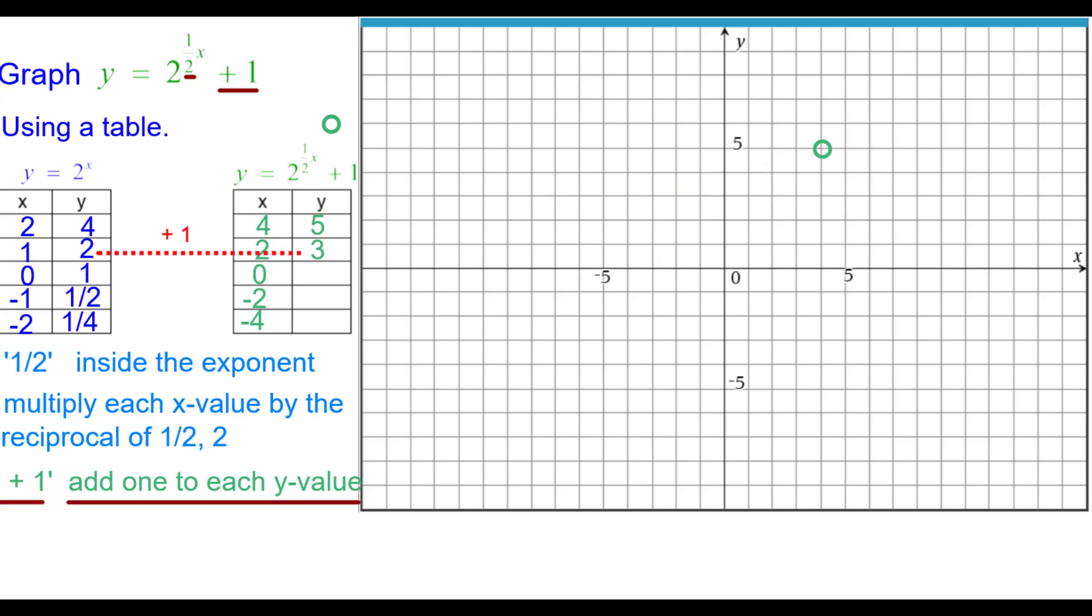So 2 plus 1 is 3. Plot 2 comma 3. 1 plus 1 is 2. Plot 0 comma 2. A half plus 1 would be a half plus 2 halves which is 3 halves. Negative 2 up 1 and a half. And a fourth plus 4 fourths is 5 fourths. Negative 4 comma 1 and a quarter.